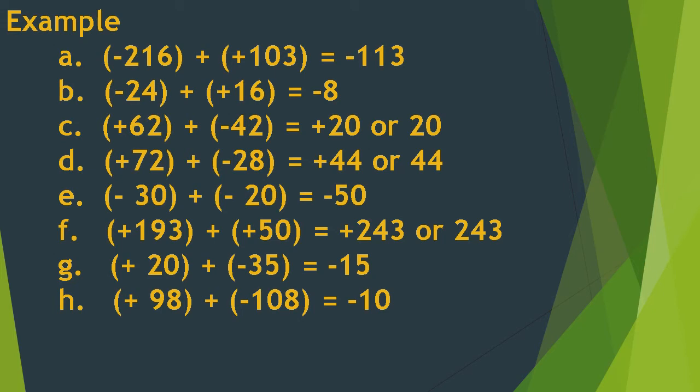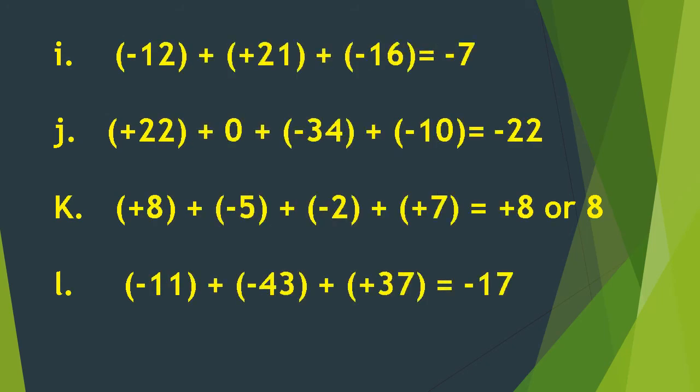Letter G: positive 20 plus negative 35 — the answer is negative 15. Since 35 is the bigger number and its sign is negative, we get negative 15. Letter H: positive 98 plus negative 108 is equal to negative 10. Since 108 is the greater number, we take the negative sign, giving us negative 10.